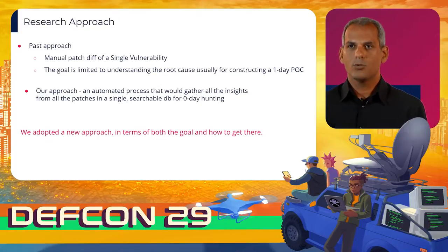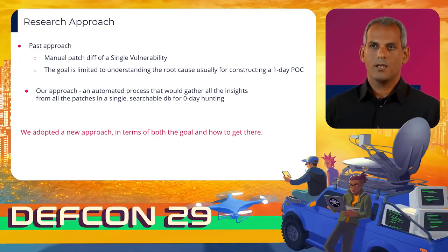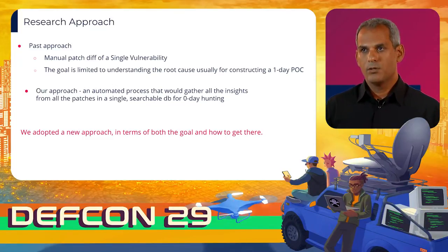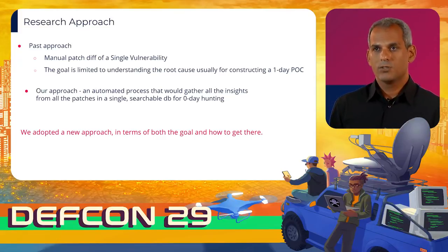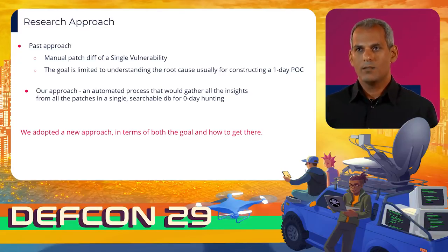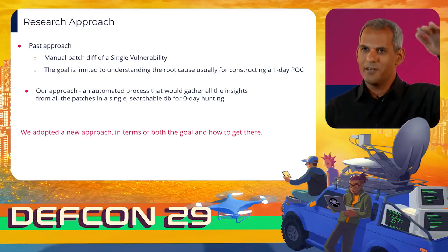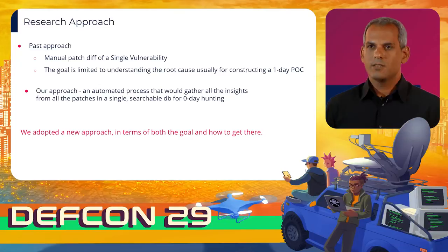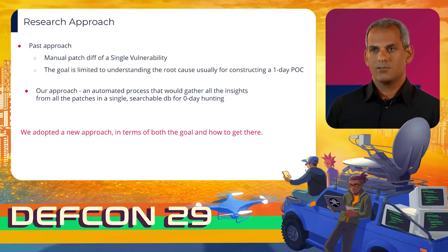It was time to think about our research approach. Until now, patch diffing was done manually by comparing the differences of a vulnerable executable to its new code version after the fix. The main goal was focused on understanding the root cause of a single vulnerability and building a one-day exploit. We aimed higher — we wanted to find zero days. We understood that in order to achieve it, we would need to build an automated process that would gather insights from all the patches in a single searchable database.